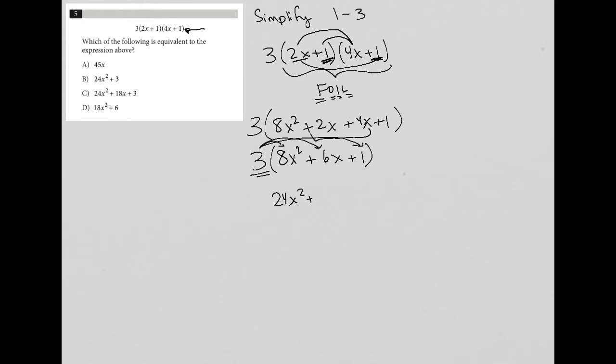And then three times 6x, which is positive 18x. And three times one, which is plus three. And that gives me choice C.